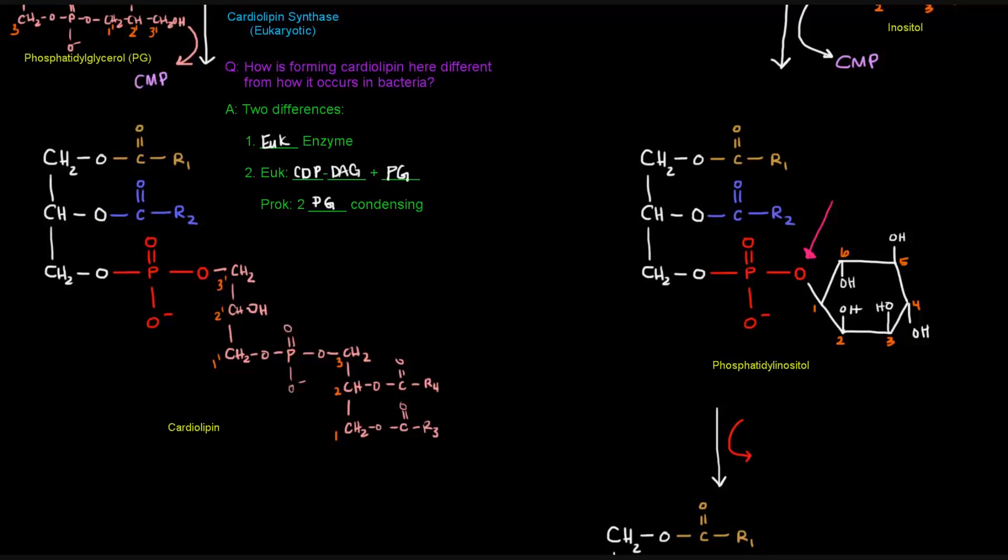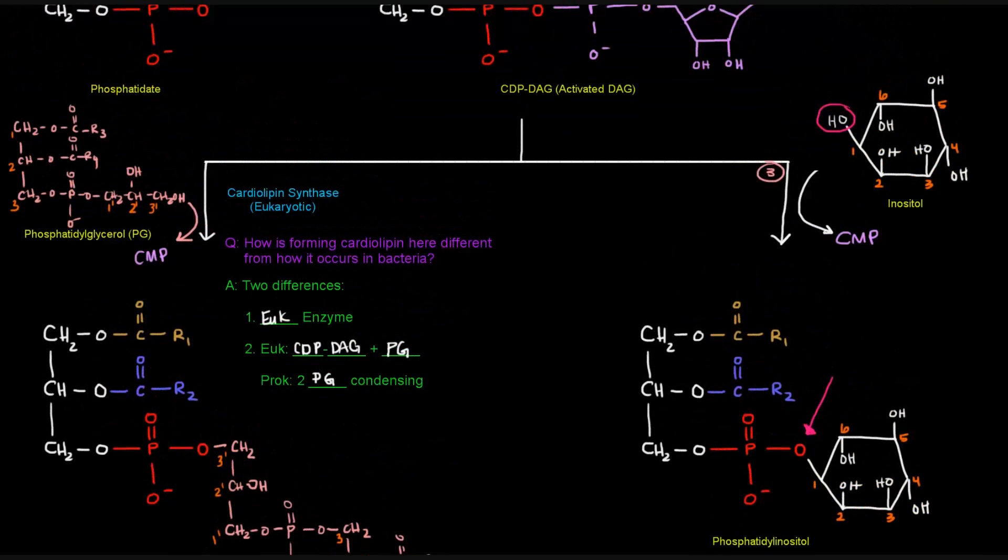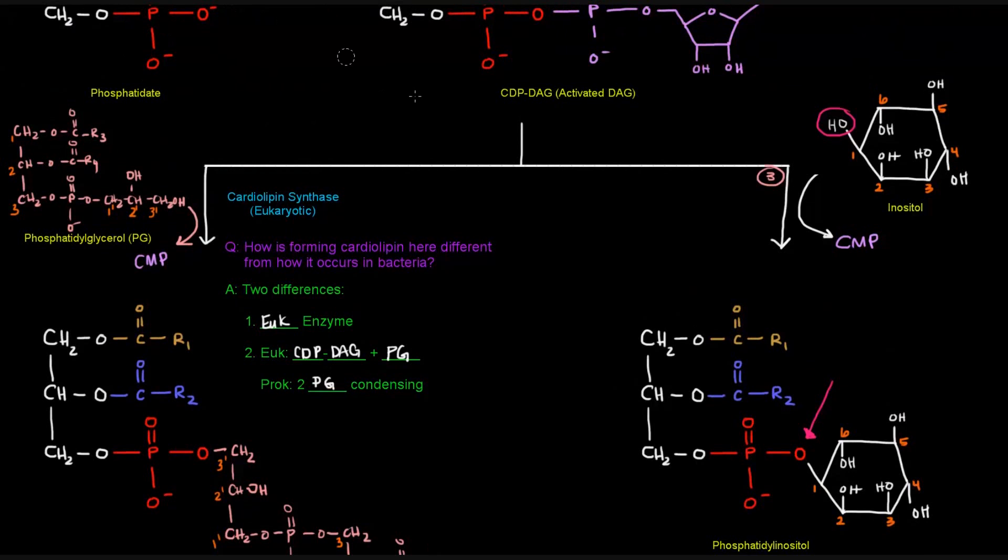And now, so that was basically our step three, right? Our step three in that, that was the addition of the polar head group alcohol. And that was catalyzed by phosphatidyl inositol synthase. That makes sense. It's just making phosphatidyl inositol.